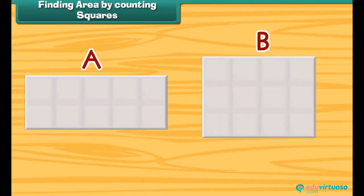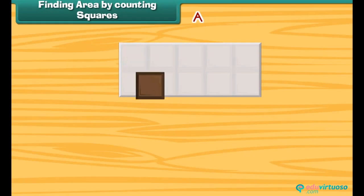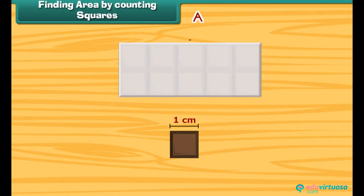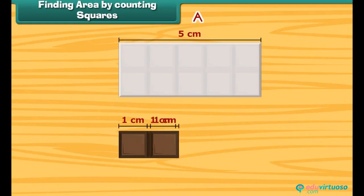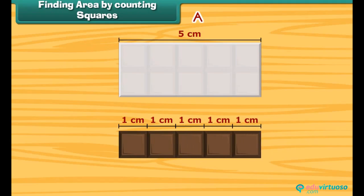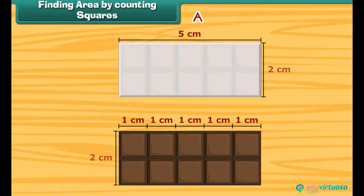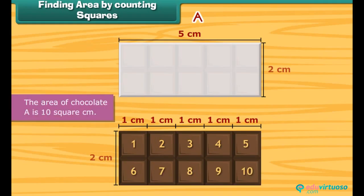We have these two chocolates. Let us find out which one is bigger and which one is smaller. We will take the help of one square piece of chocolate of side one centimeter. The length of chocolate A is five centimeters, so five squares can be arranged along its length. The width is two centimeters, so two squares can be arranged along its width. In total, ten squares can be arranged on it. So the area of chocolate A is ten square centimeters.